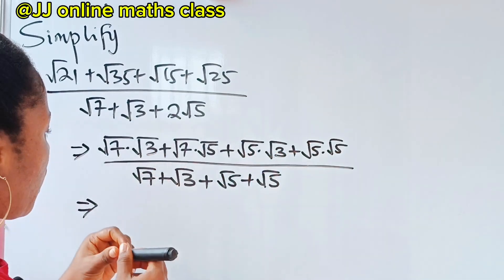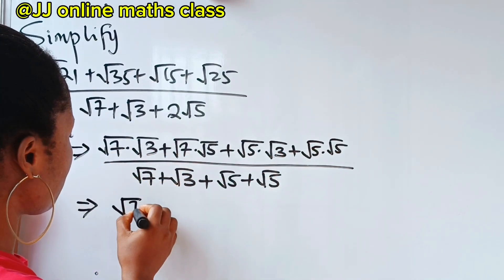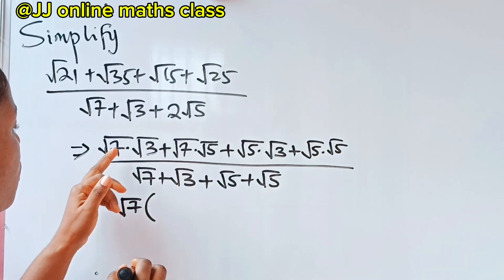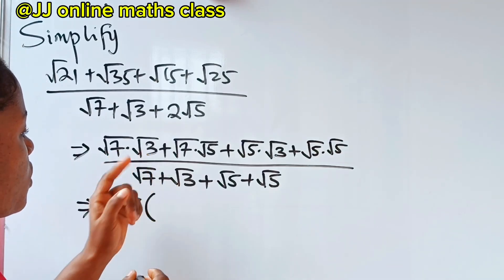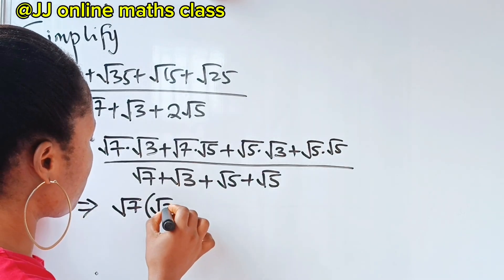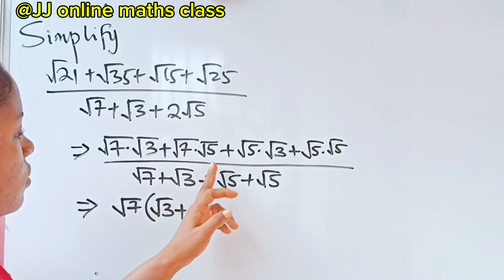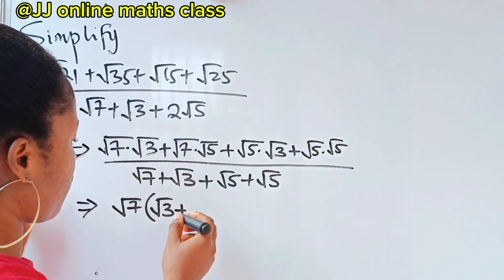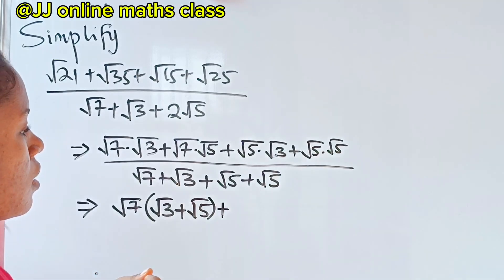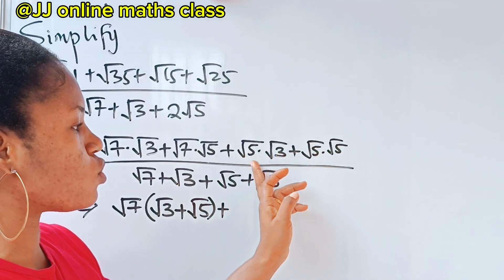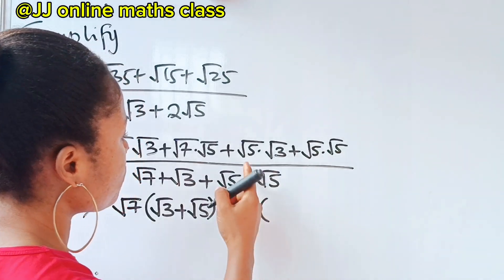So let's bring out the common terms. We factor out √7, giving us √7 in brackets. Then √7 × √3 divided by √7 leaves us with √3. And √7 × √5 divided by √7 leaves us with √5.